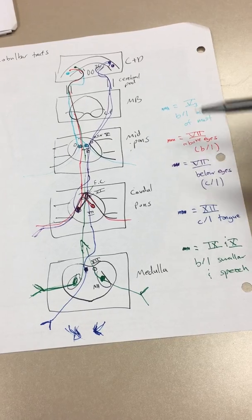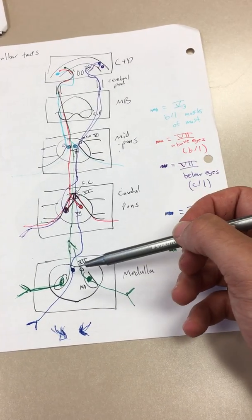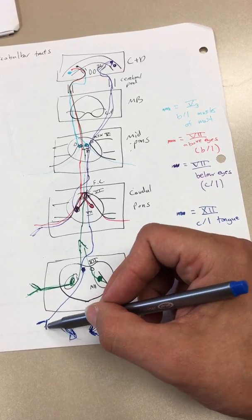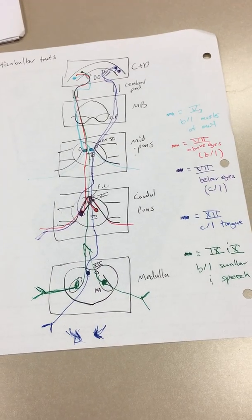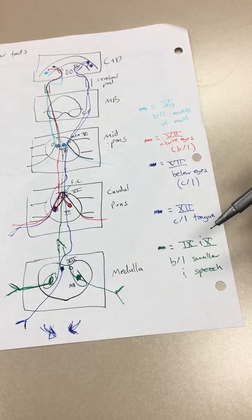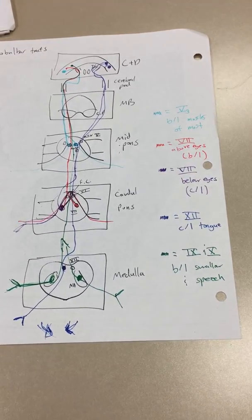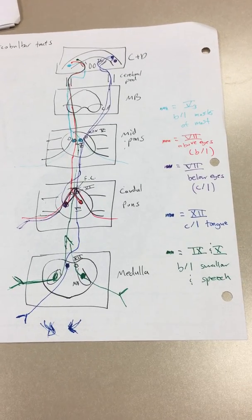The tongue is going to be only contralateral within the medulla. And remember that is, if you're activating muscles on that side, you're actually pushing your tongue away. And then finally, nucleus ambiguus contains 9 and 10, which has to do with swallowing and speech, and will be a bilateral innervation. And those are the corticobulbars.